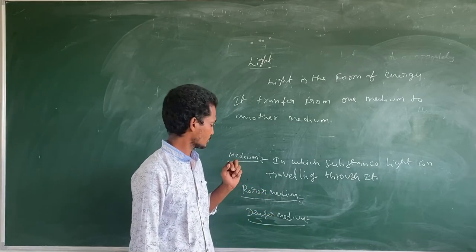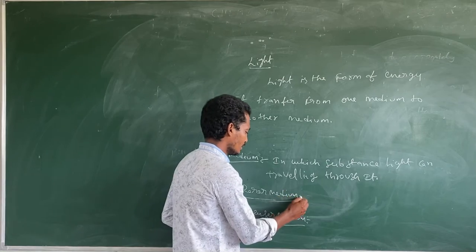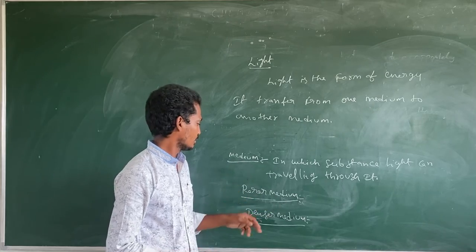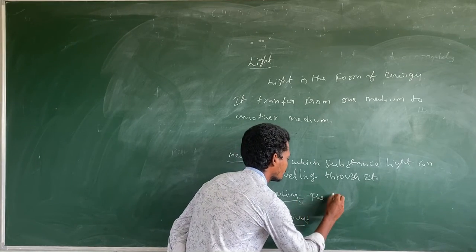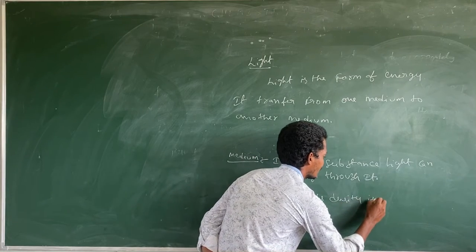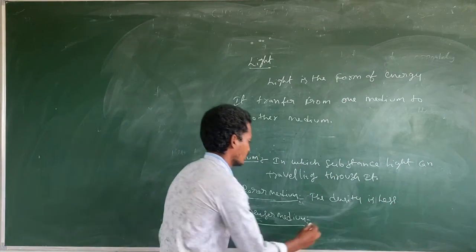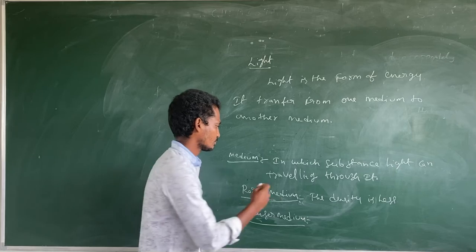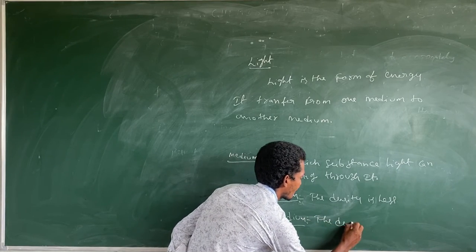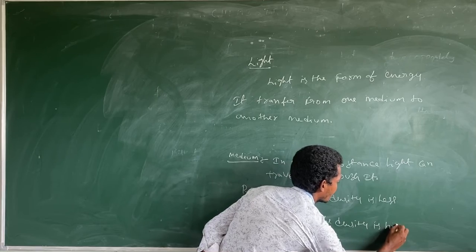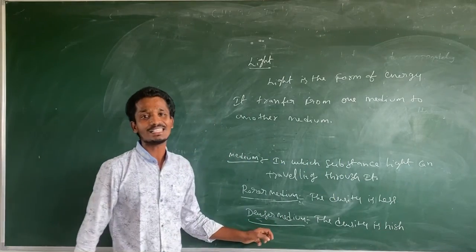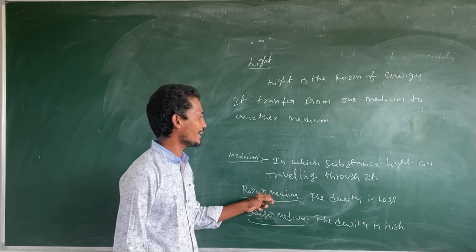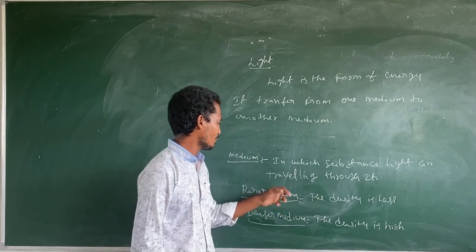What is the rarer medium? In the rarer medium, the density is less. The density is less. And the velocity of the particles is very high.